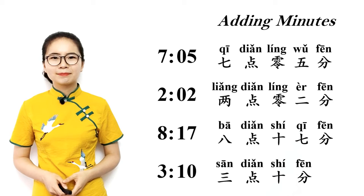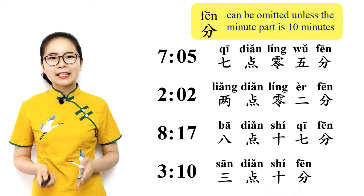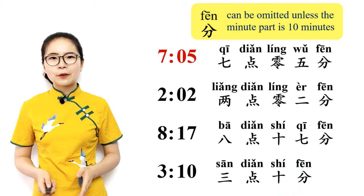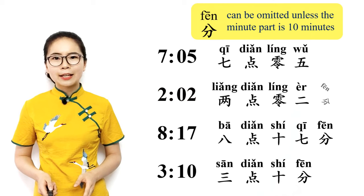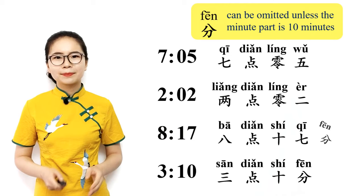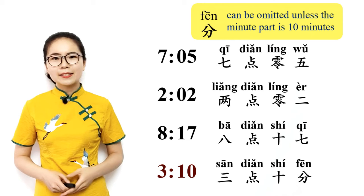When telling the time, 分 can be omitted, unless the minute part is ten minutes. So for 7:05, the minute part is five minutes, so I could omit 分 and just say 七点零五. This is also the case for 2:02 and for 8:17. However, in the case of 3:10, the minute part is 10 minutes, so 分 cannot be omitted — you have to say 三点十分.